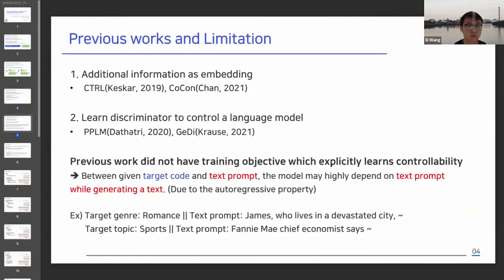Now I want to talk about the motivation for our methodology. Previous controllable text generation studies can be divided into two main categories: first, providing additional information to the model; second, learning additional discriminators to control a language model. Neither method has learned to control with explicit training objectives. This may make the model mainly dependent on the text prompt, not on the desired target genre. As the model learns language from large corpora, even though we ask the model to generate text with a target code — for example, sports — they are likely to continue the sequence by conditioning on the given text prompt, producing an economic topic rather than the target sports topic.